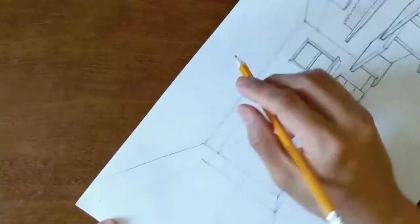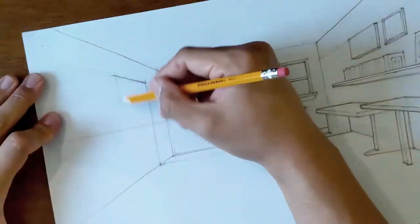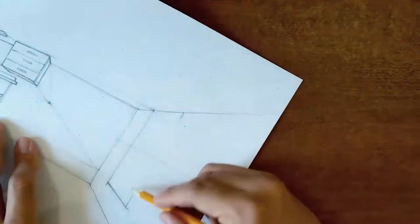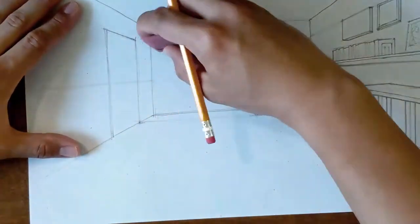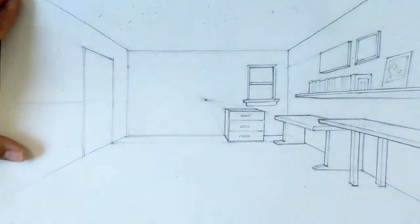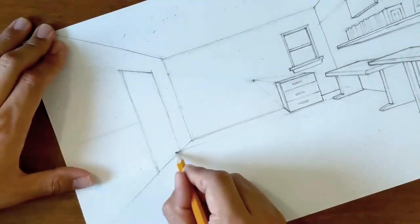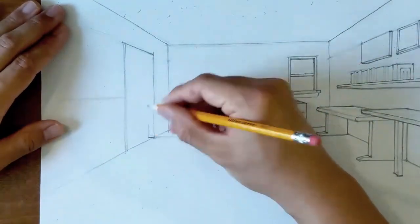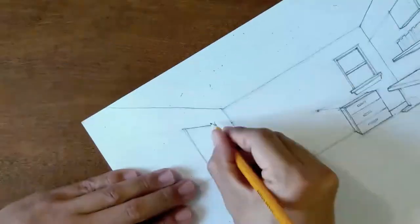So it's kind of the opposite of what I did with the picture frame. I started with a horizontal line and then I wrapped it around the left wall with a diagonal line that recedes back to the vanishing point to find the top line of the door. And here I'm adding in the thickness of the door.